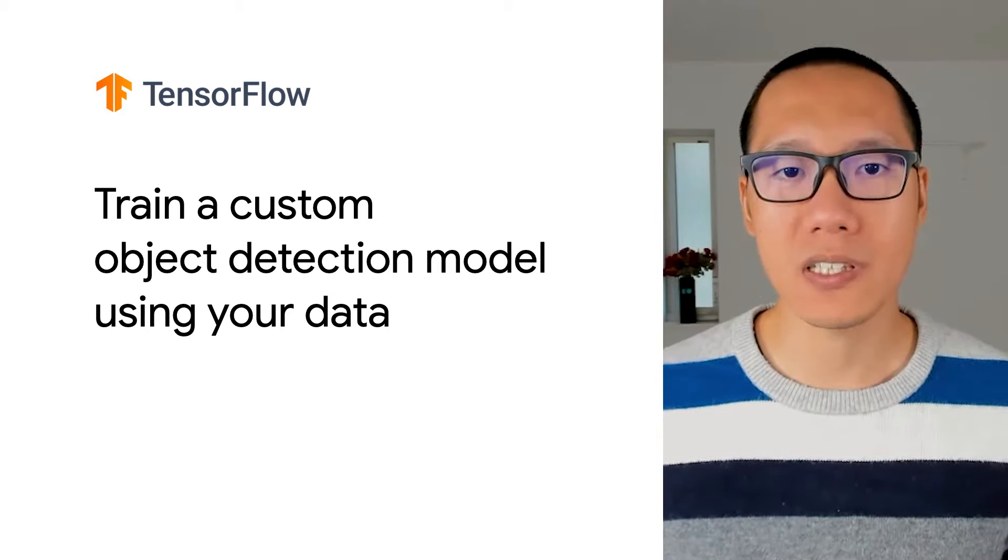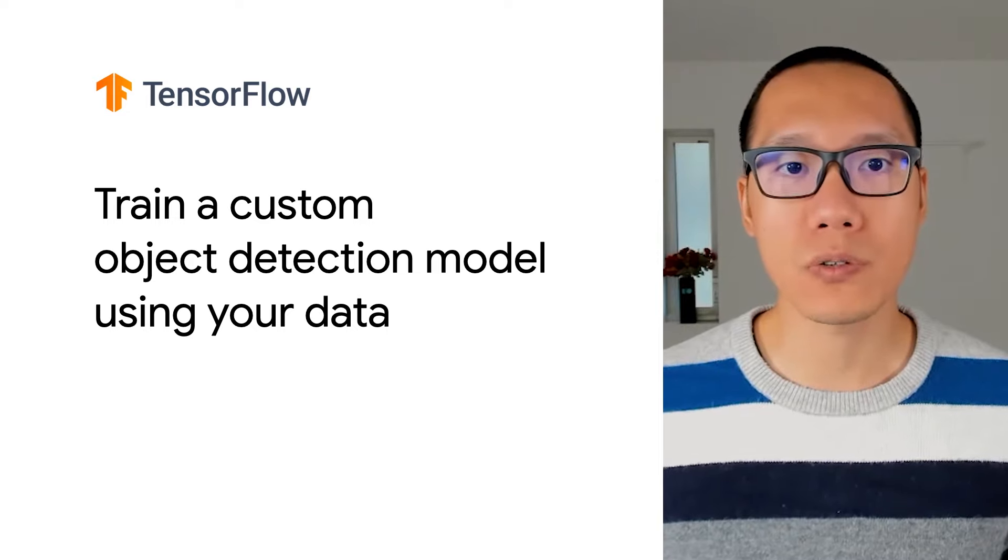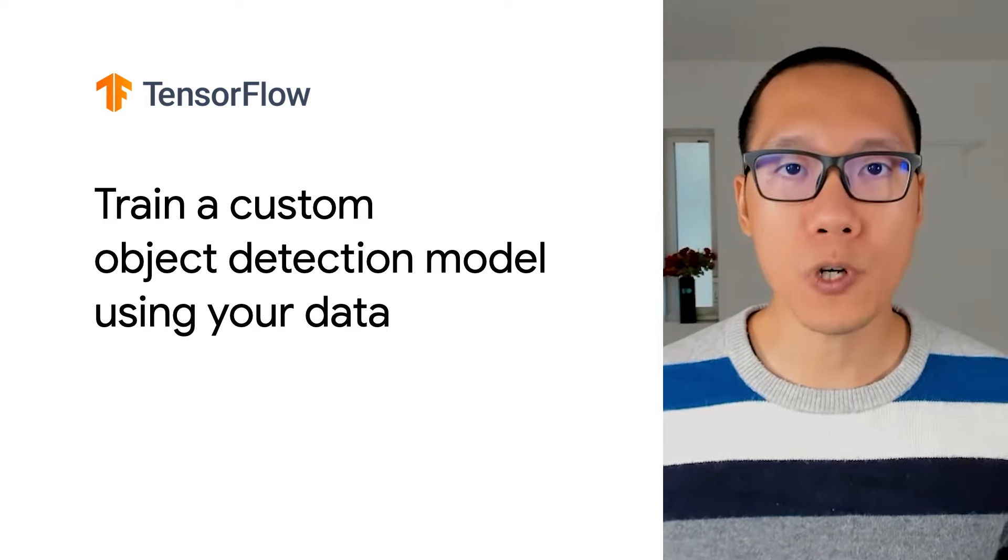In the first video of this series, I showed you how easy it is to run object detection on Raspberry Pi using a pre-trained TensorFlow Lite model. Pre-trained models are usually trained on general datasets so they can recognize general objects quite well, such as a mouse or a keyboard. However, in many cases, you may need a model that can recognize specific objects such as the Android figurines.